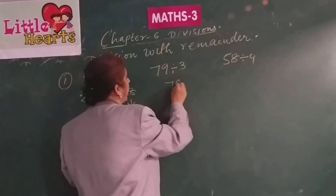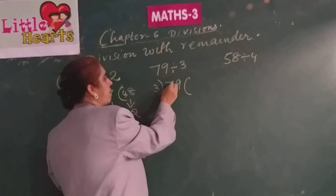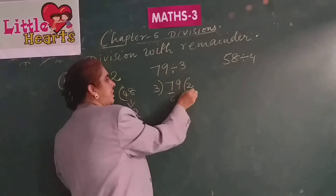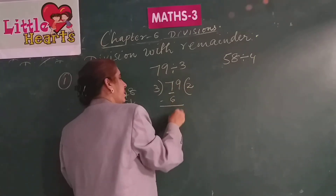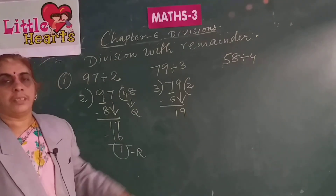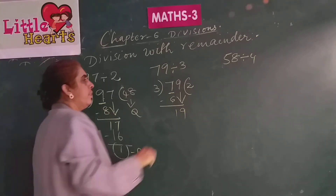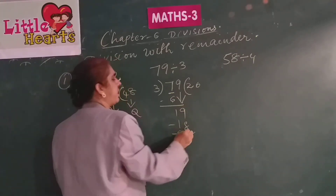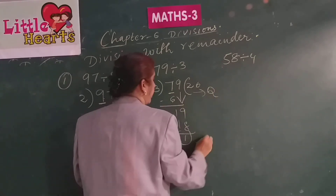79 divided by 3: as 7 is greater than 3, consider 7. Read 3 table: 3 twos are 6; 7 minus 6 is 1. Bring down 9 to get 19. 3 sixes are 18 — we go with the nearest number. 19 minus 18 is 1. So the quotient is 26 and the remainder is 1.